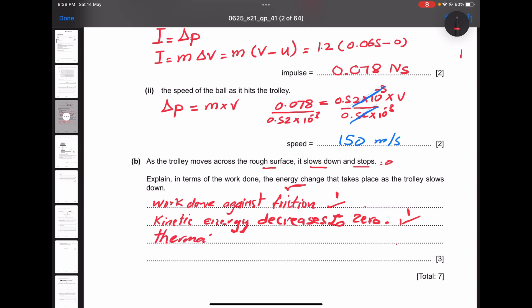Because of friction between the trolley and the surface, the rough surface. Now we get the third mark.